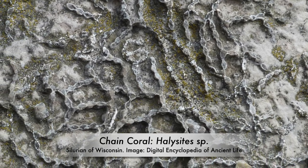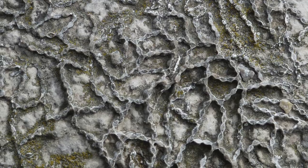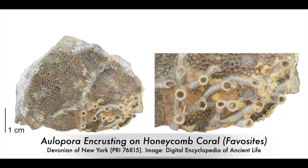It lived at the same time and in the same place as our honeycomb corals. Other tabulate corals had coralites that were shaped like pipes and are frequently found encrusting upon other fossils — that means growing on top of them. In this particular example, the encrusting tabulate coral Allopora is growing on top of a specimen of honeycomb coral from the Devonian period of New York.